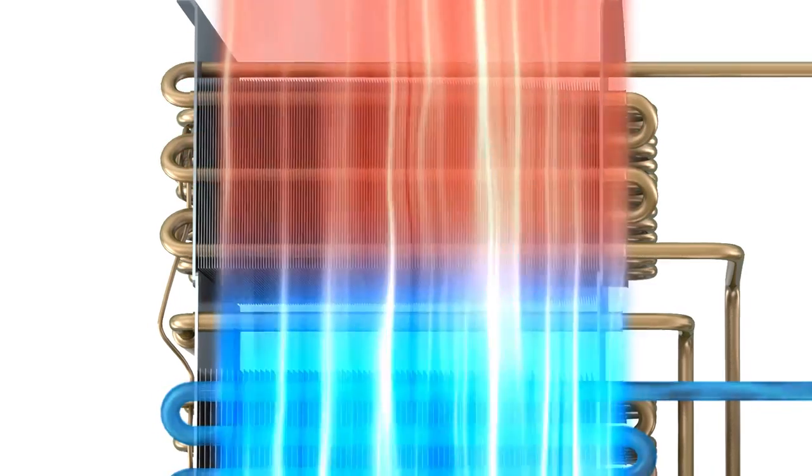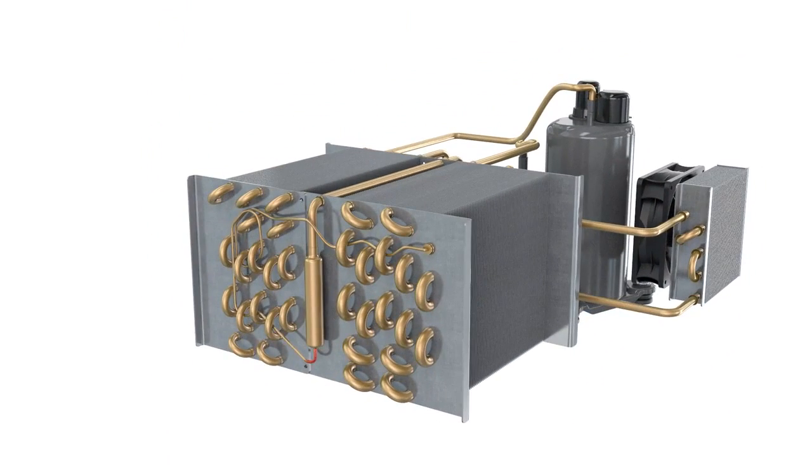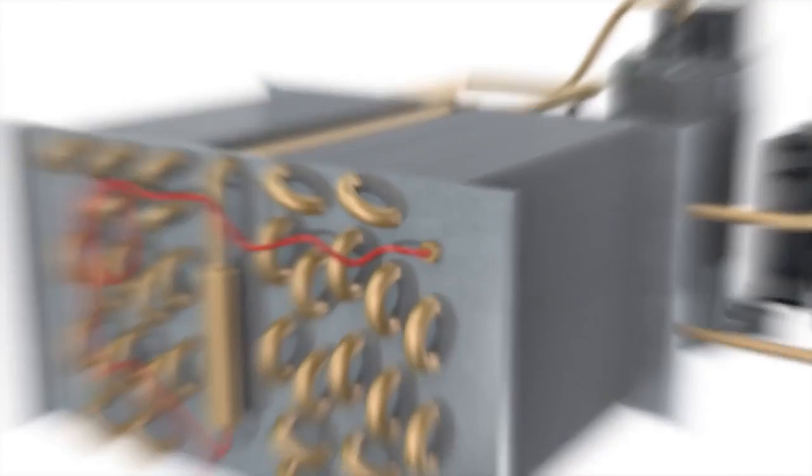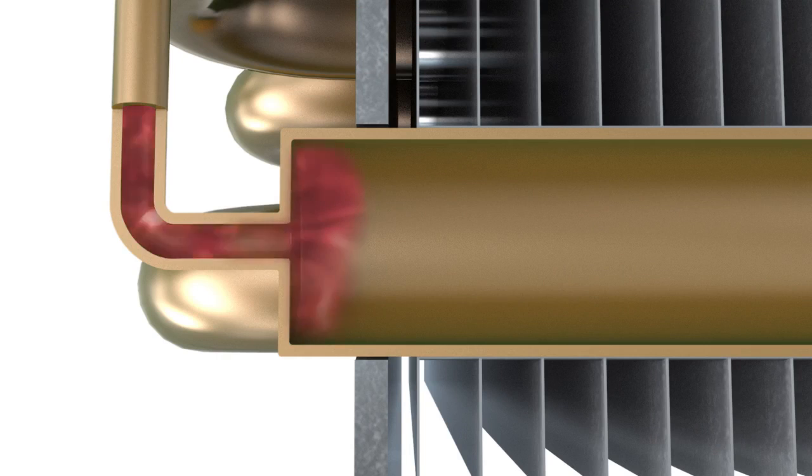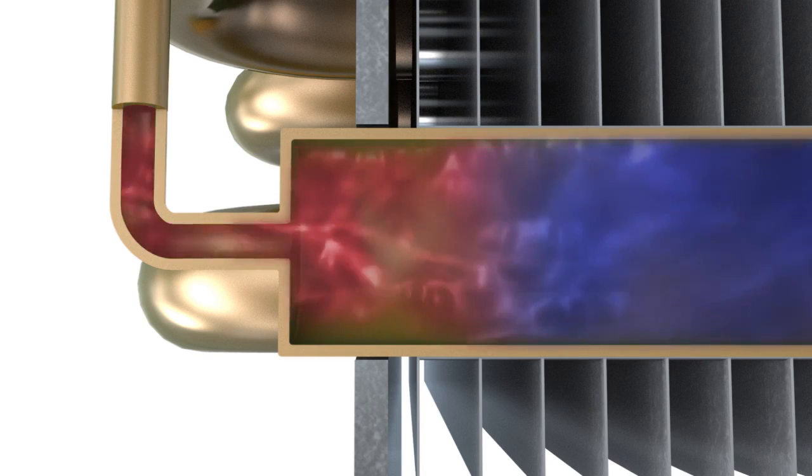The coolant then passes through a restriction in the tubing into the front heat exchanger. As the coolant passes from the thinner tube into the wider pipe work of the front heat exchanger, it is able to expand. This relieves pressure, causing the temperature of the coolant to drop.